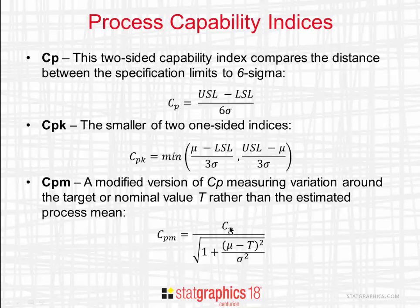It's CP divided by the square root of one plus the difference between the mean and the target value squared divided by sigma squared. CPM is always less than or equal to CP. It can be much smaller if the mean of the process is much different than the target value.